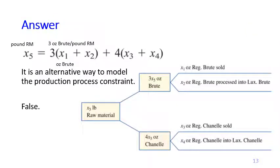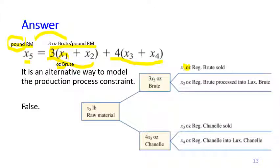The answer is false. Although from a language standpoint it kind of makes sense that raw material equals some fraction of Brut plus Chanel, if you check the units it does not make sense. The left-hand side has units of pounds. The coefficient 3 has units of ounces of Brut per pound of raw material, and x1 has units of ounces — so 3·x1 would give ounces²/pound, which does not match pounds on the left-hand side. Therefore this constraint is wrong.